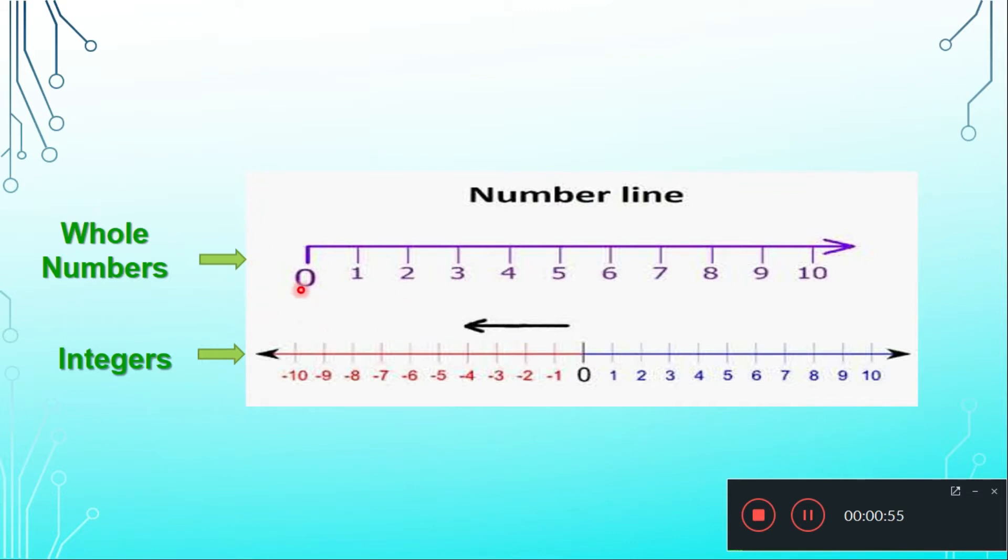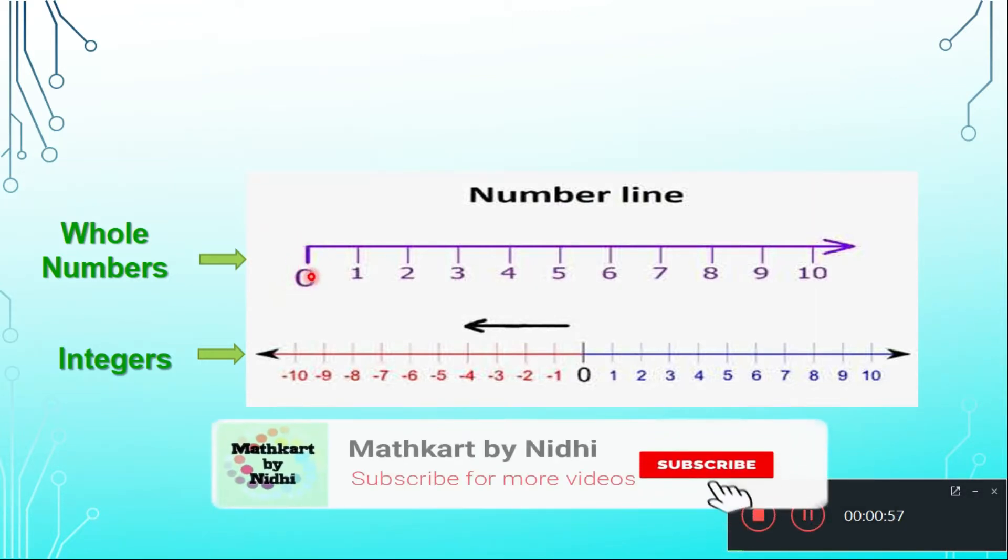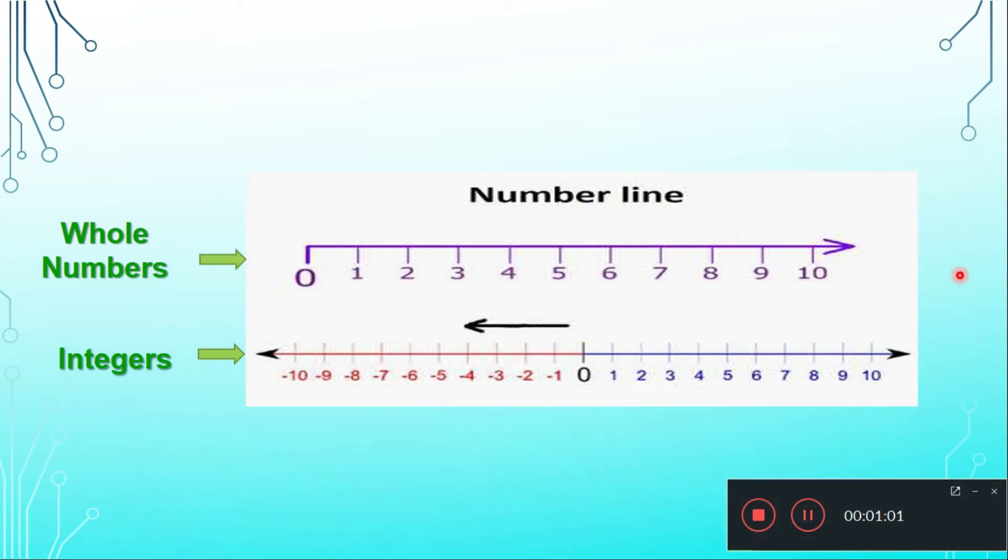So let us see. Already we have learned to represent the whole numbers and the integers on number line. In the whole number number line we are using 0, 1, 2, 3, 4, 5, 6 and so on, and in integers we use 0 with the positive numbers and the negative integers.